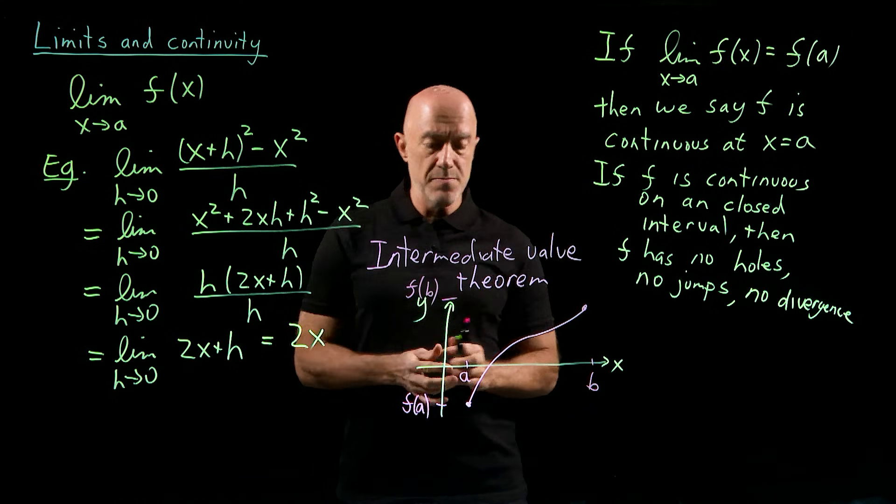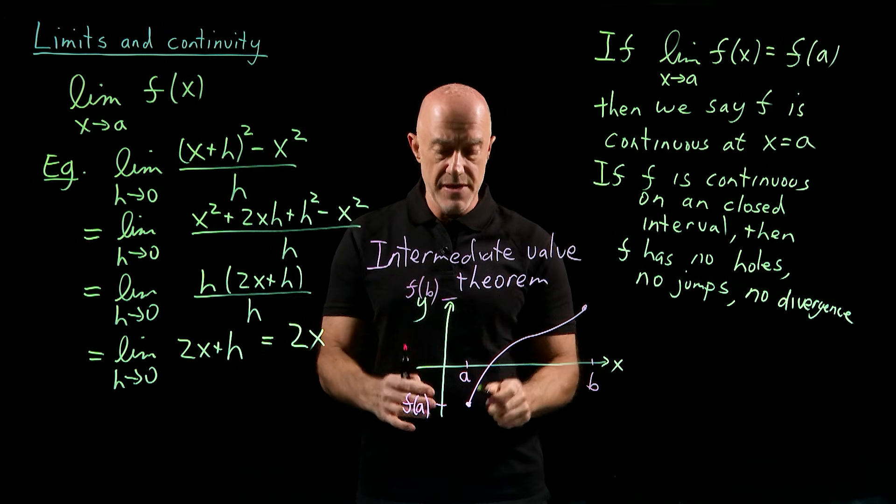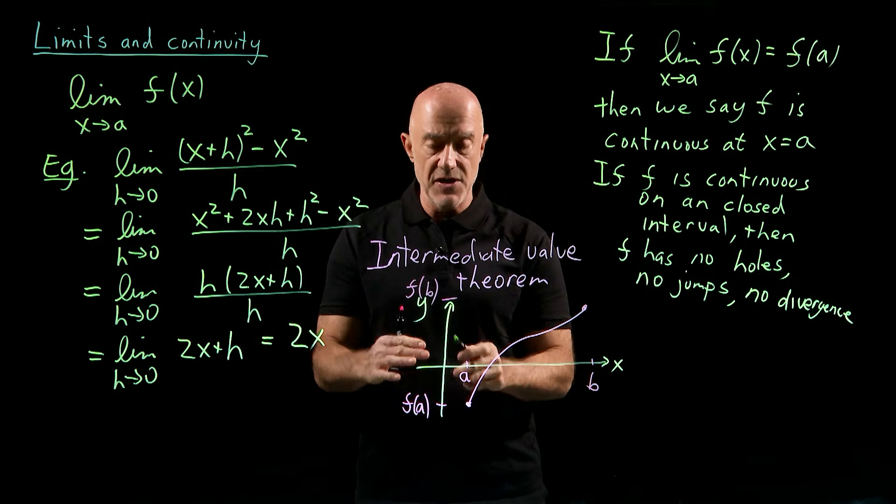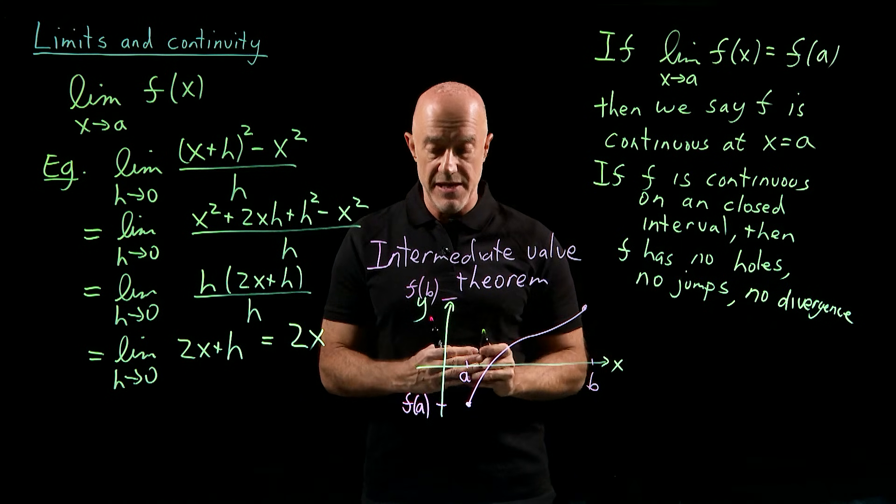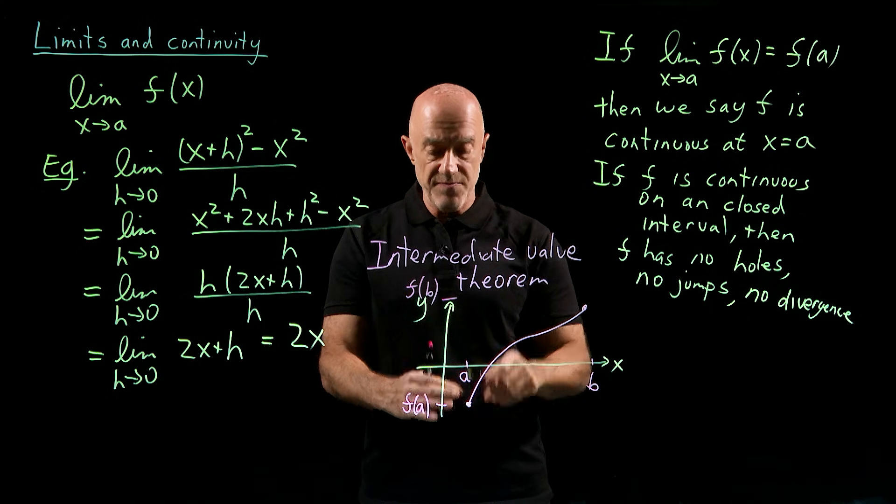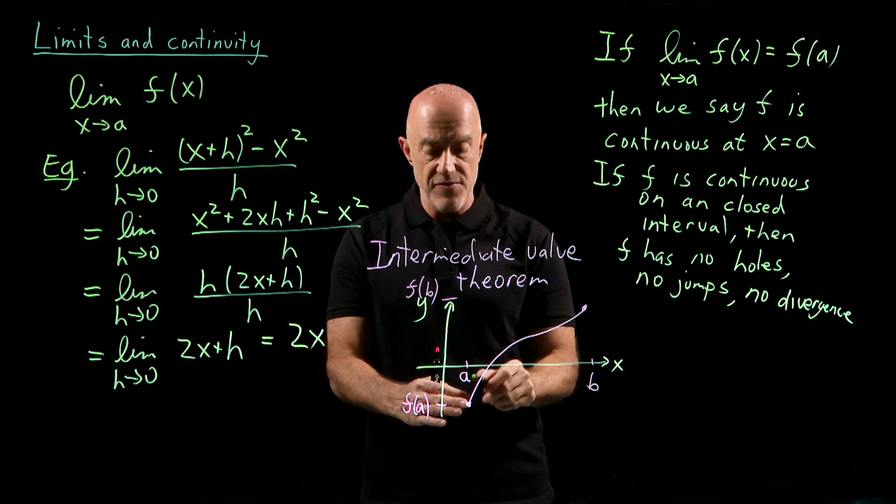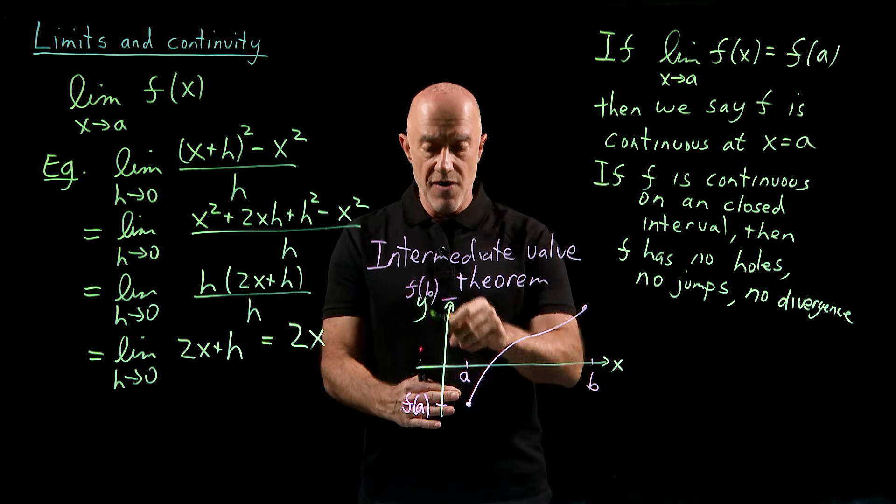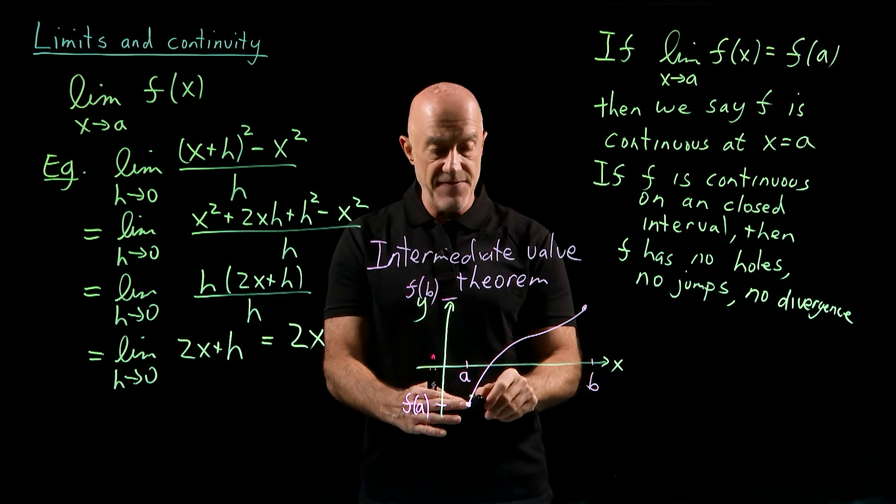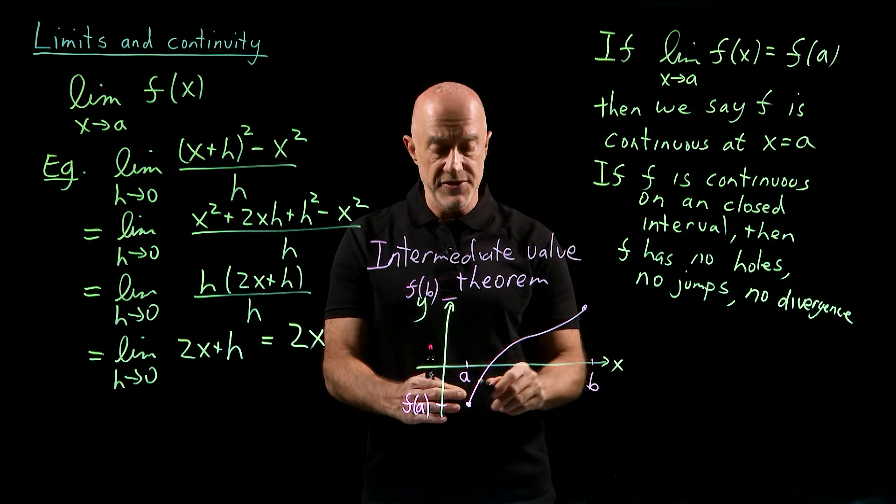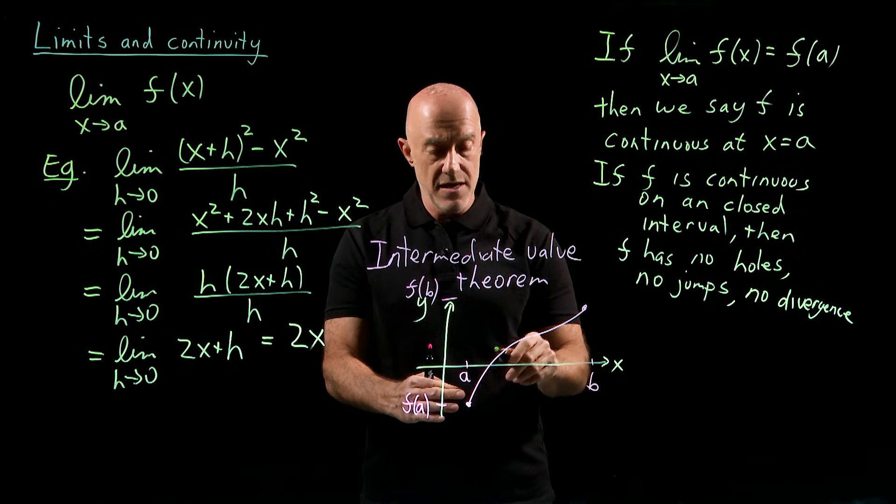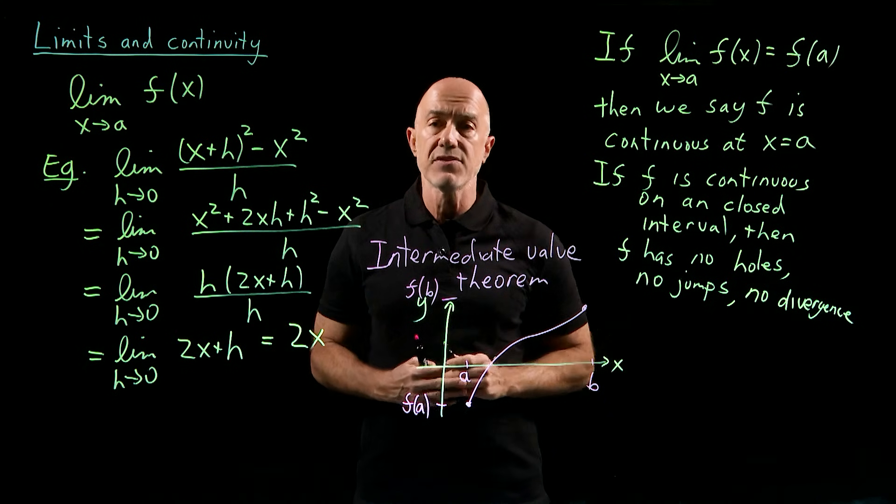The intermediate value theorem says that if the function f is continuous on the interval AB, then it will pass through every single value of y between f(A) and f(B). It's kind of an obvious theorem. If you look at it, every value gets passed through.